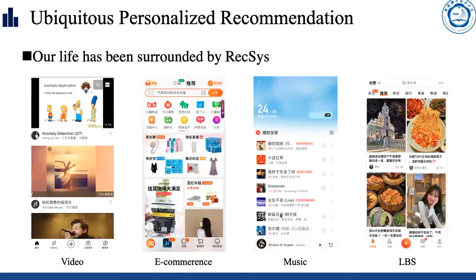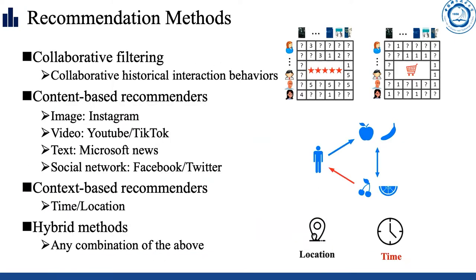Nowadays our life has nearly been surrounded by recommendation services — the videos we play on YouTube, the movies we watch on Netflix, the items we purchase on Amazon. For recommender systems, there exist four main categories of methods including collaborative filtering, content-based, context-based, or any combination of the above. Among them, time and historical behaviors play a vital role in the recommendation result.